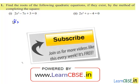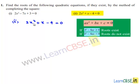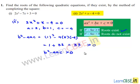Coming to the second bit, which is 2x² plus x minus 4 is equal to 0. Comparing the given equation with the standard equation ax² plus bx plus c equals 0, we get a equals 2, b equals 1, and c equals minus 4. The discriminant b² minus 4ac equals 1² minus 4 times 2 times (minus 4), which equals 1 plus 32, giving 33, which is greater than 0. Since b² minus 4ac is greater than 0, the roots exist.